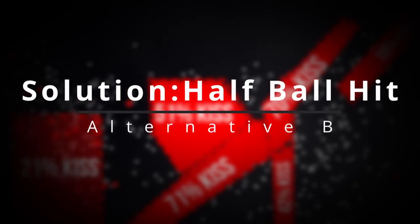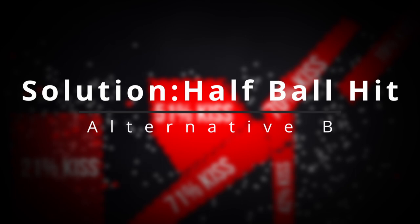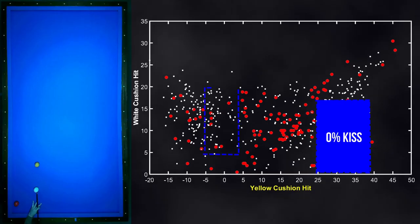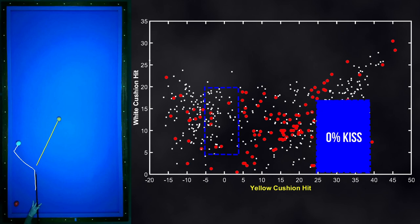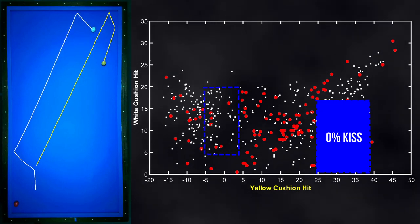I am a big fan of hitting the second ball with half thickness while simultaneously applying topspin to the cue ball. It results in a natural run.